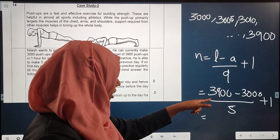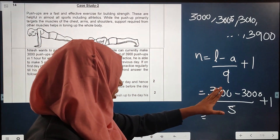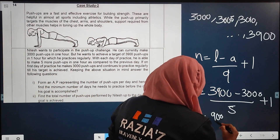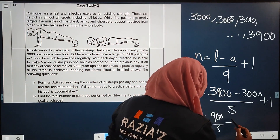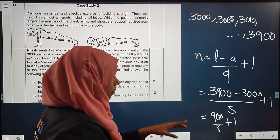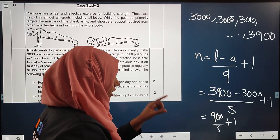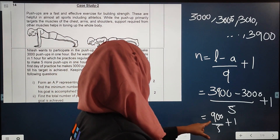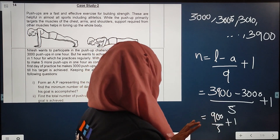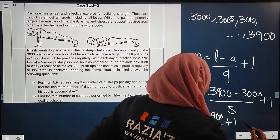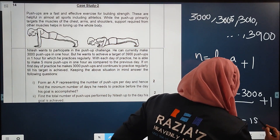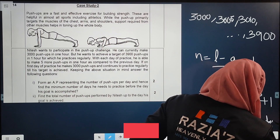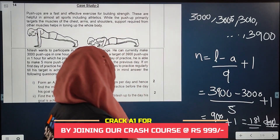So 3900 minus 3000 gives 900. Then 900 divided by 5 gives 180. And 180 plus 1 equals 181. So the minimum number of days required is 181 days — that is the minimum number of days Nidesh needs to practice before his goal of 3900 push-ups is accomplished.